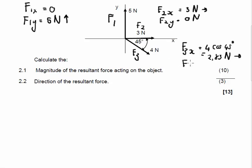If we go and we look at F3 in the Y direction, it's going to be 4 sin 45 degrees. We use the 45 degree angle because we're interested in the angle with the X axis. 4 sin 45 degrees gives you 2.83 Newton as well. This is going to be downwards.